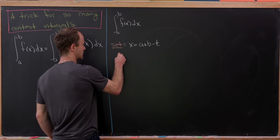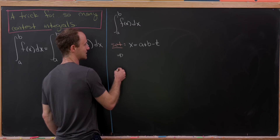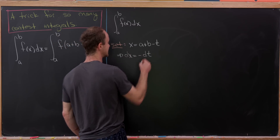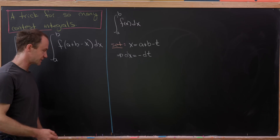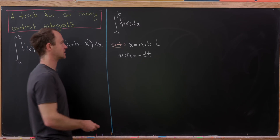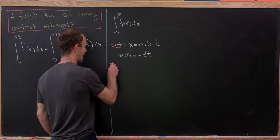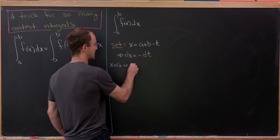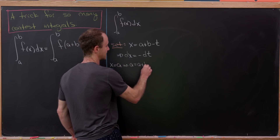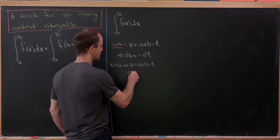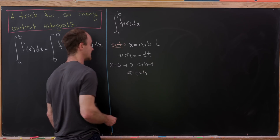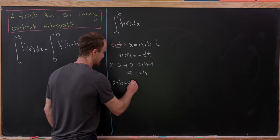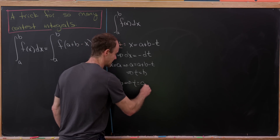Notice that immediately tells us dx = −dt. Now we just have to sort out the bounds of integration. When x = a, that gives us a = a + b − t, which leads to t = b. Furthermore, if x = b, we see that leads to t = a.